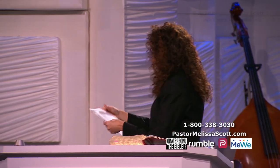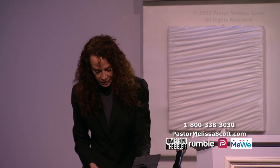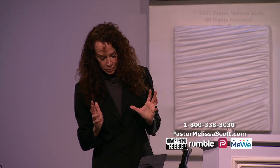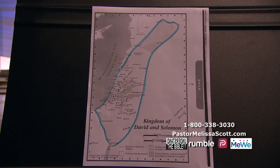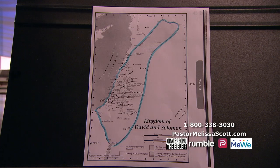Moses, through God, becomes the liberator of the children of Israel and they come out of Egypt's bondage. There is a time when judges are ruling the people, and then there is a prophet of God who is rejected. Ultimately they get a monarchy. That monarchy starts with Saul — who started out good but turned bad — goes to David, and then to Solomon. When the kingdom was united, this is the land as it looked, ruled by a singular king right up until Solomon died.